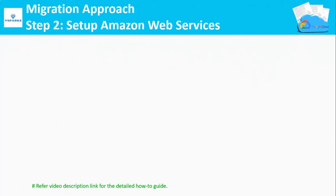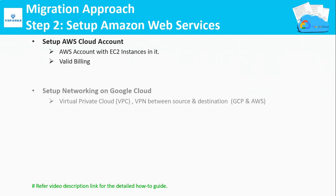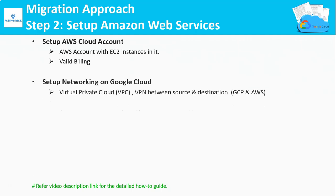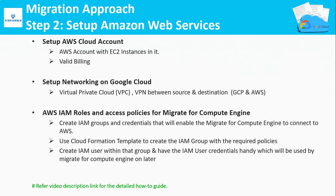Step 2: Set up AWS for migration. In the same way you did it in GCP, you need to prepare your AWS environment, which is going to be our source for migration. First, you need to set up your AWS account with a valid billing. Then configure your AWS networking. Create IAM groups, users, and roles that will be used by Migrate for Compute Engine.